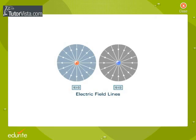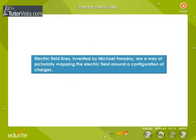Electric field lines, invented by Michael Faraday, are a way of pictorially mapping the electric field around a configuration of charges.